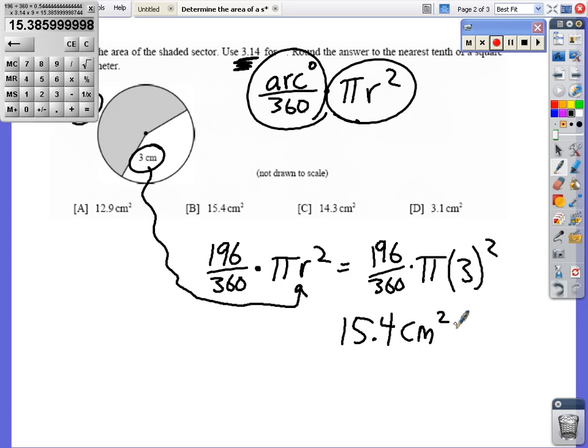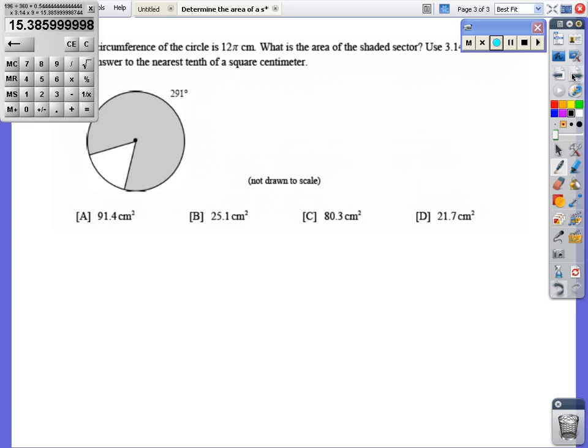Not too bad. Let's take another look at a different one. I want to do this one because it's a little different. It gives me the circumference - the circumference in π - so I've got to deal with that. I would have rather they just given me the radius. That's what I need because the formula is arc in degrees over 360 times πr². There's no circumference in this formula, so how am I going to get the radius?